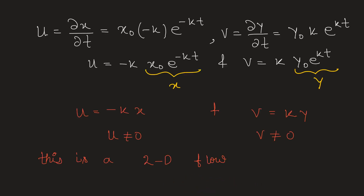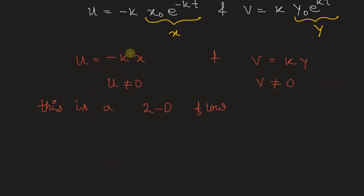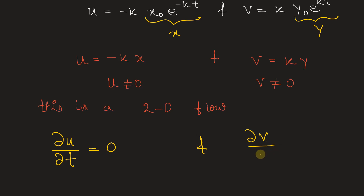Now we need to determine whether the flow is steady or unsteady. Differentiating u with respect to time gives zero, because k is a constant and x is treated as a constant when differentiating with respect to time. Similarly, dv/dt also equals zero. Therefore, the flow is steady.